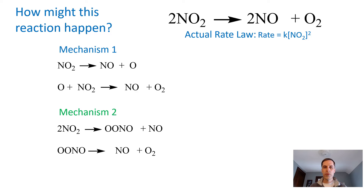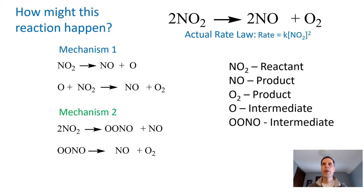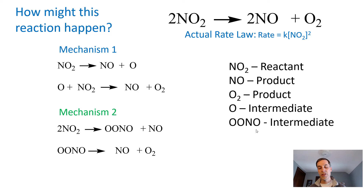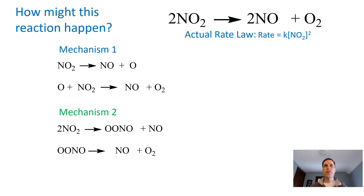Hopefully you had a chance to identify the different species. NO2 is the only reactant; NO and O2 are products. The atomic oxygen O and OONO are both intermediates, because an intermediate is something that gets formed and then used up later in the reaction — and that's what happens with both of these.